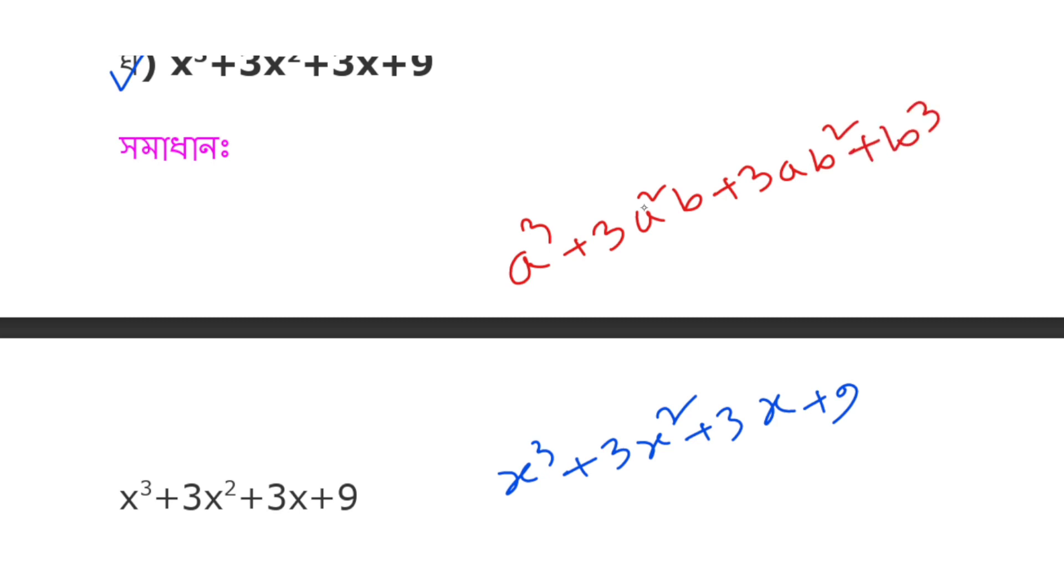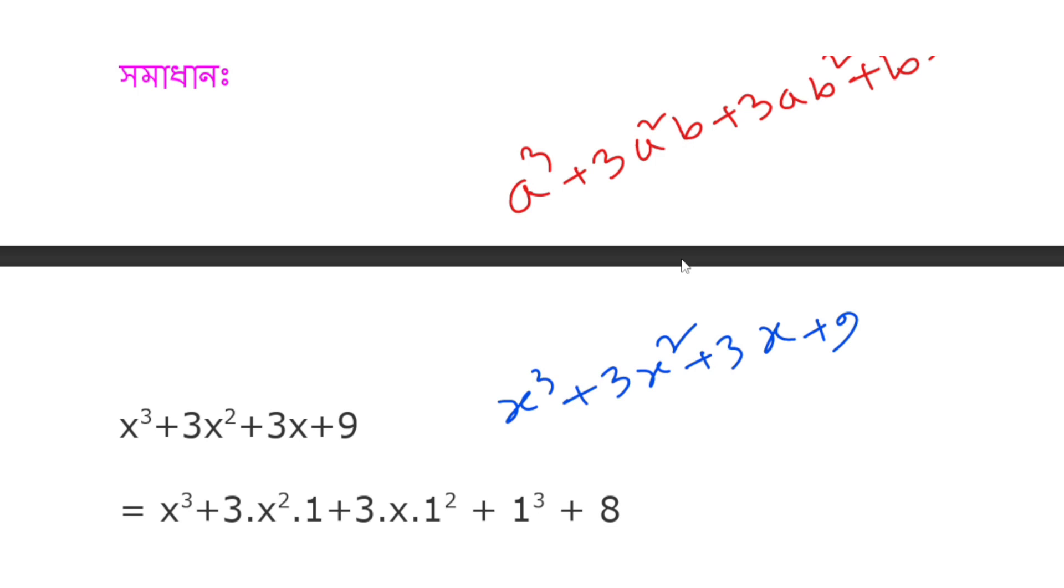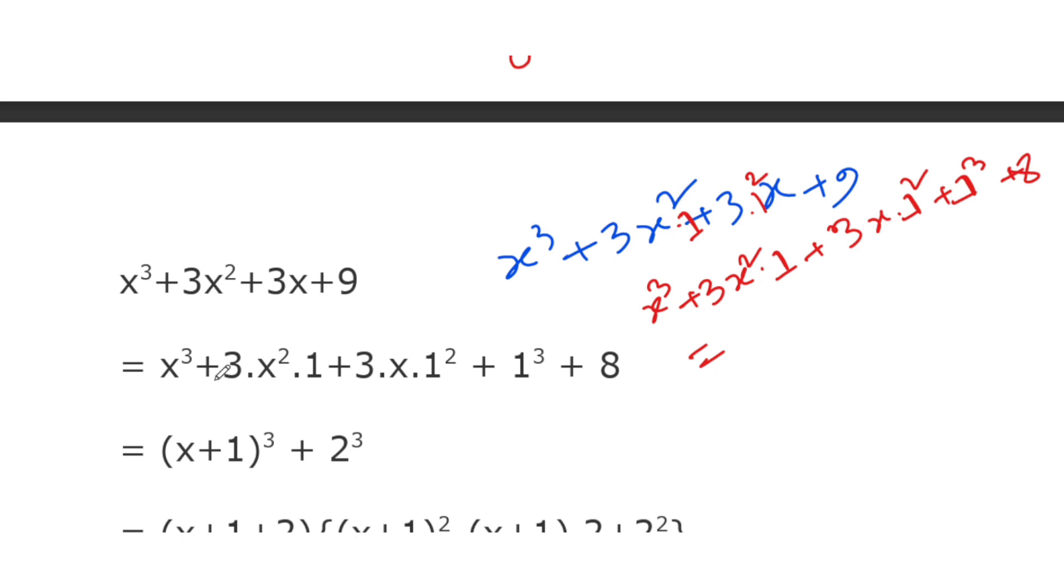The expression x³+3x²+3x+9 can be rewritten. Notice that x³+3x²·1+3x·1²+1³ equals (x+1)³. So we have (x+1)³+8, which is (x+1)³+2³.